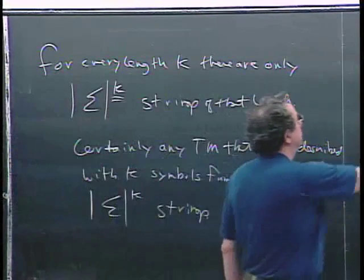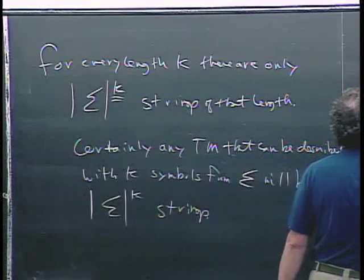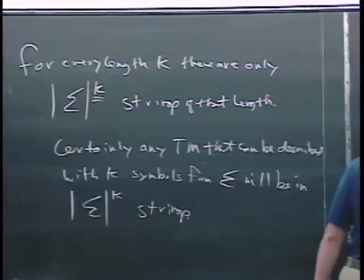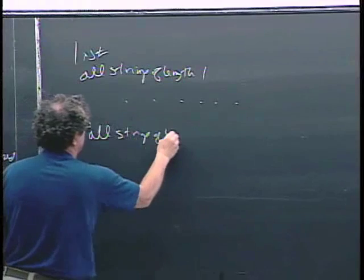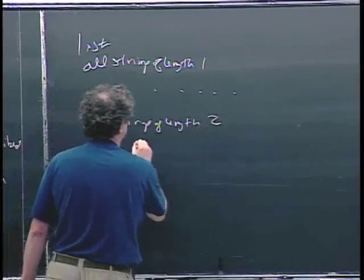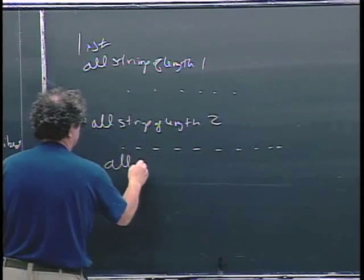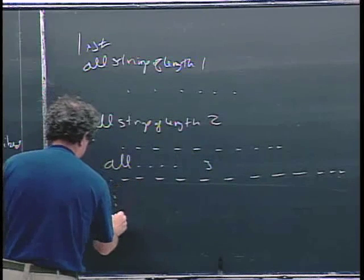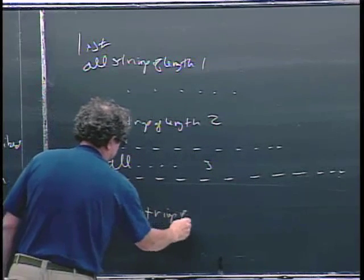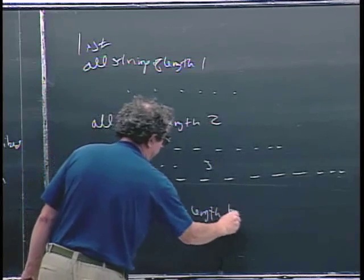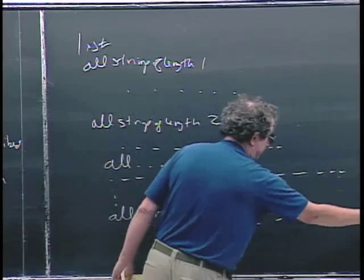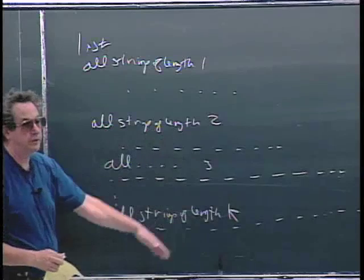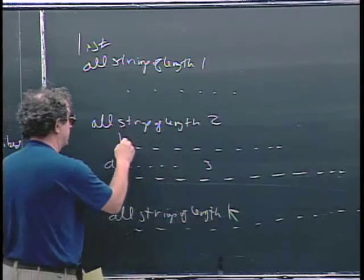I can list all strings of length one, dot dot dot, followed by all strings of length two. There are those ones. And then all strings of length three, more of them. And then as we go down, all strings of length K for any fixed K. And my point again is that this list here is going to be finite for any particular K.